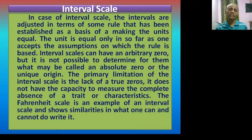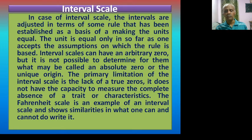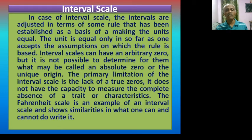In the case of an interval scale, the intervals are adjusted in terms of some rule established as a basis for making the units equal. The unit is equal only insofar as one accepts the assumption on which the rule is based. Interval scales can have an arbitrary zero, but it is not possible to determine an absolute zero or a unique origin. The primary limitation of the interval scale is the lack of a true zero — it does not have the capacity to measure the complete absence of a trait or characteristic. The Fahrenheit scale is an example of an interval scale.